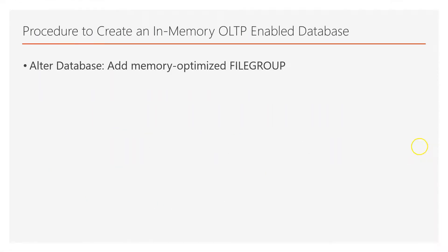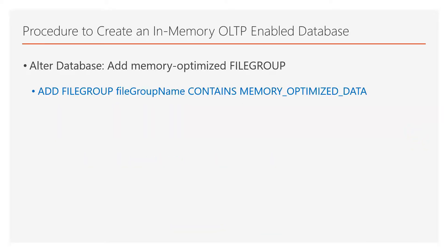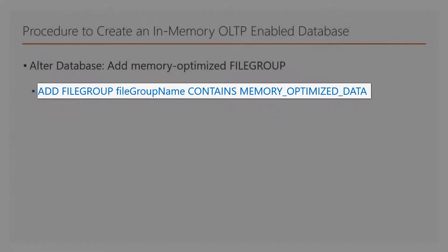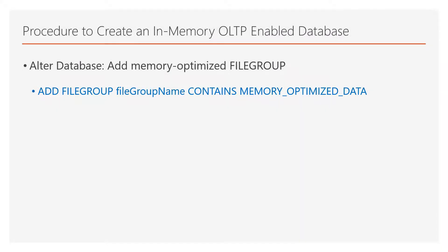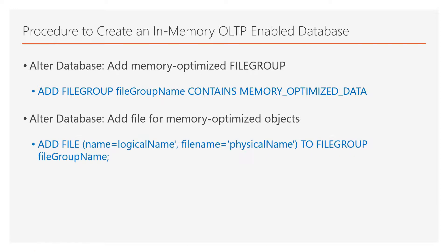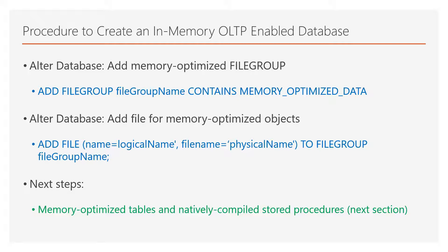That's why you need to alter the database and set the isolation level to memory-optimized elevate to snapshot. The next step is to alter the database and add a memory-optimized file group. You can do that with the command ADD FILEGROUP, specifying the file group name and the keyword CONTAINS MEMORY_OPTIMIZED_DATA. The next step is to alter the database and add the file for hosting the memory-optimized objects, using the ADD FILE command.